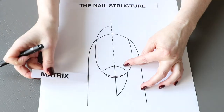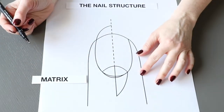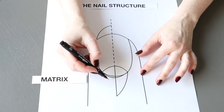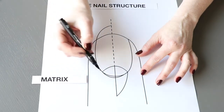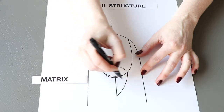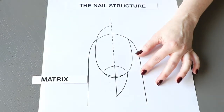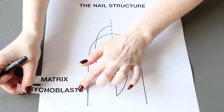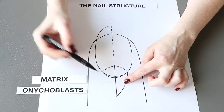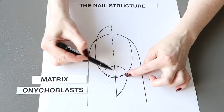The zone where the nail starts to form is called the matrix. In this zone, cells called anitroblasts form and complete their life cycle. They are soft. Anitroblasts are cells that form the nail and turn into nail plates. As new cells grow in the matrix, the older cells are pushed out, compacted, and take on the familiar flattened and hardened form of the nail.